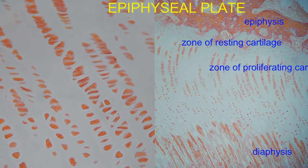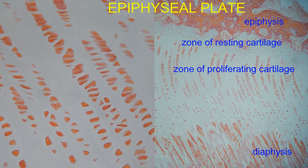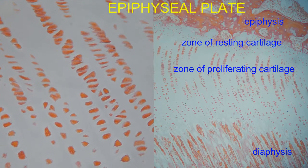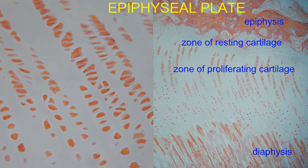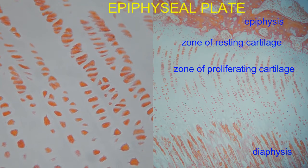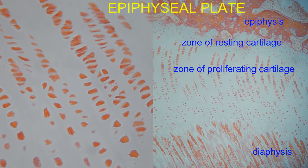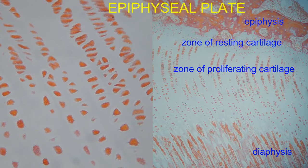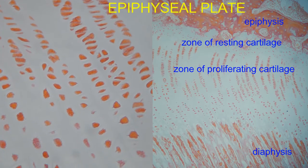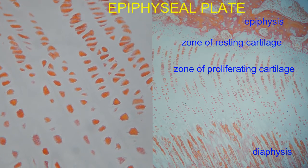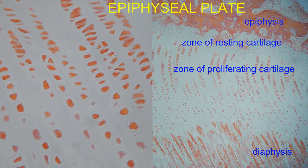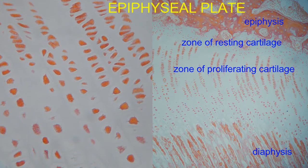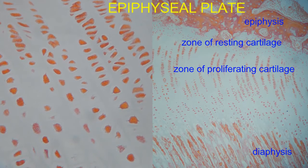In the second zone, the zone of proliferating cartilage, chondrocytes divide rapidly — so rapidly that a series of chondrocytes exist in long stacks. These stacks will replace the cartilage which calcifies and dies where the epiphyseal plate meets the diaphysis.